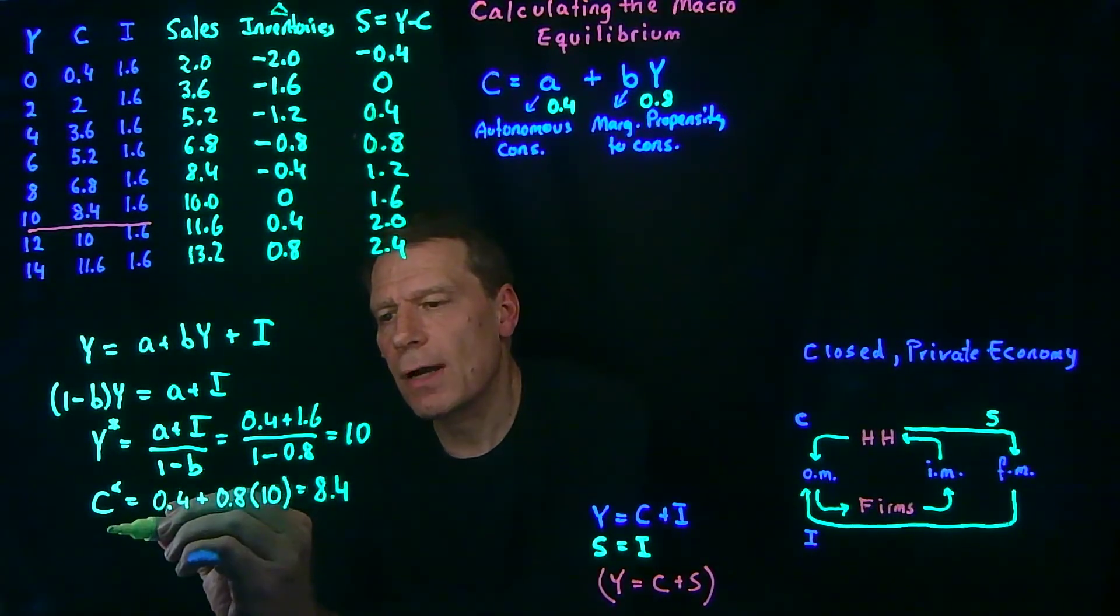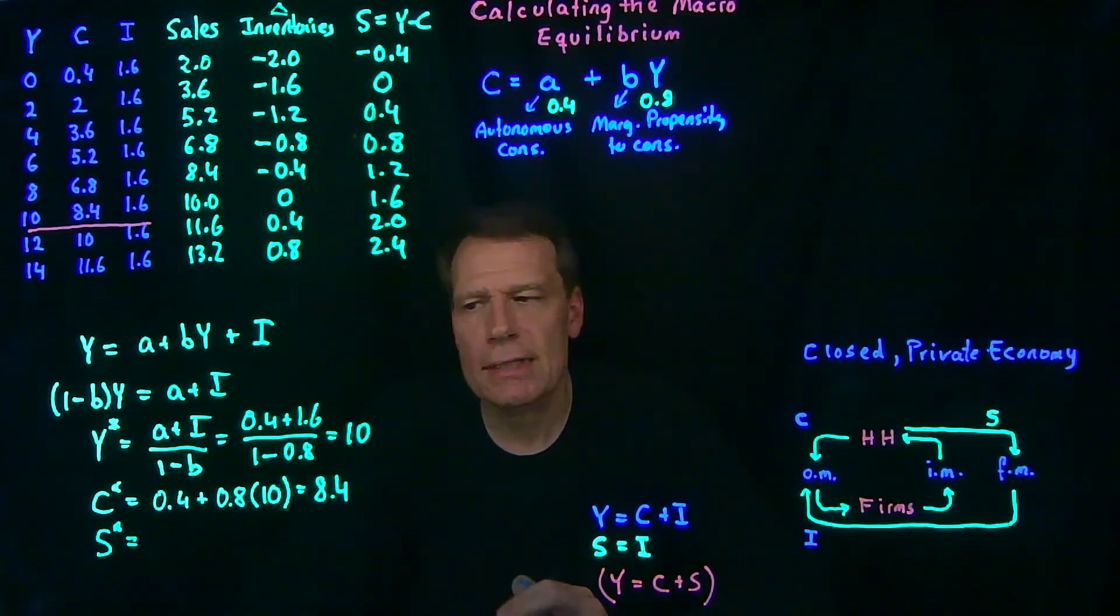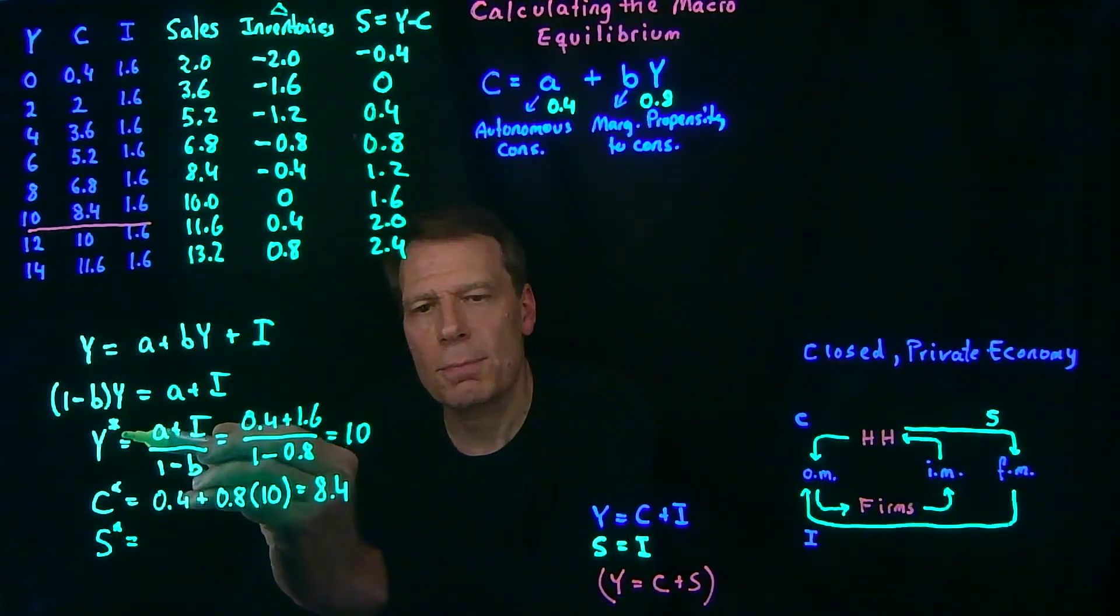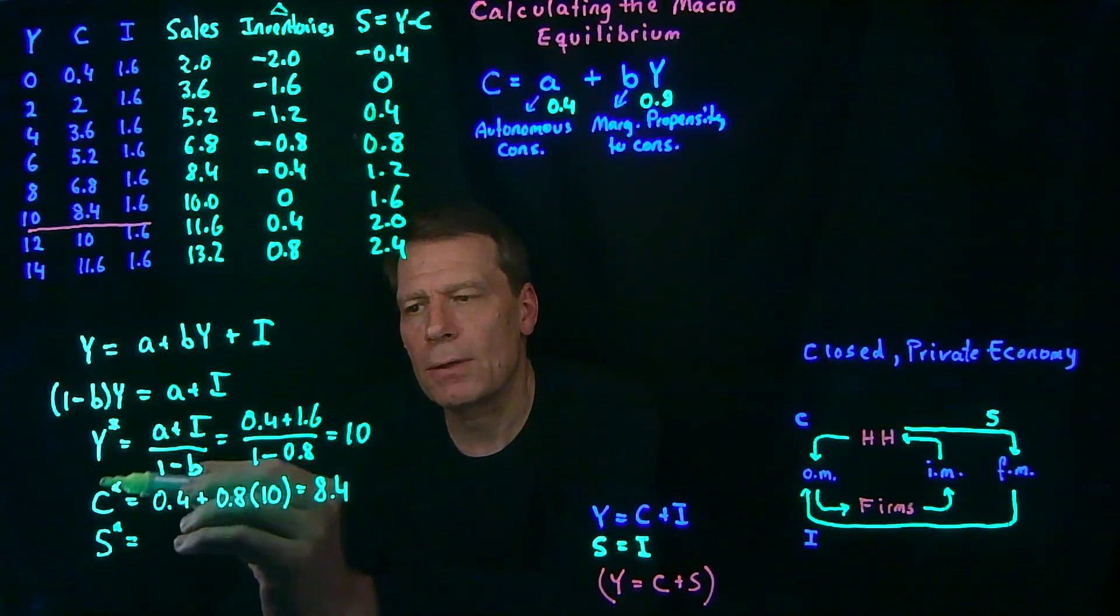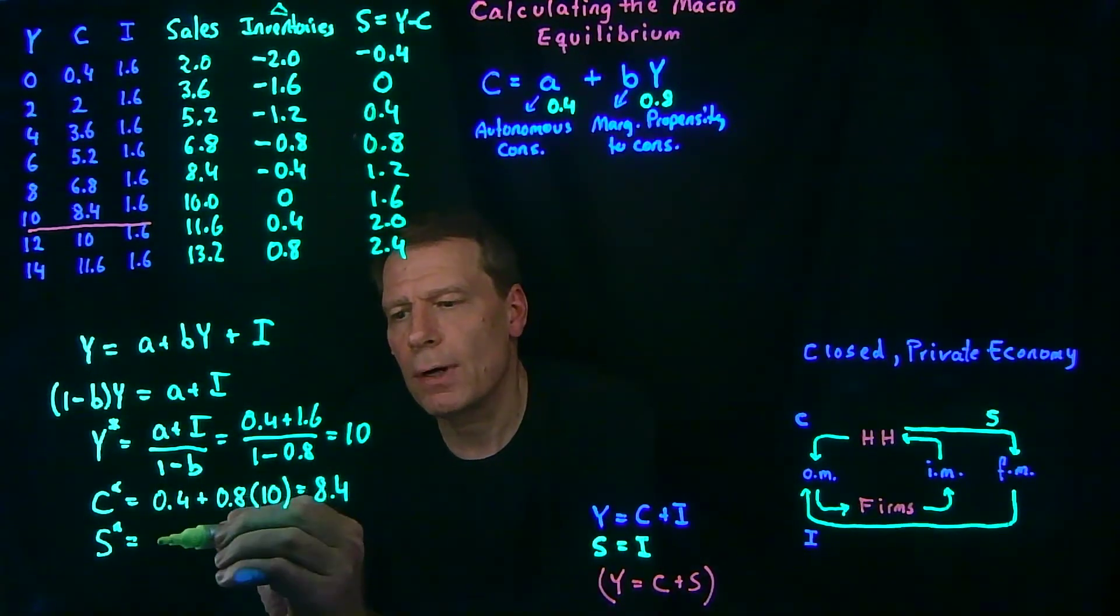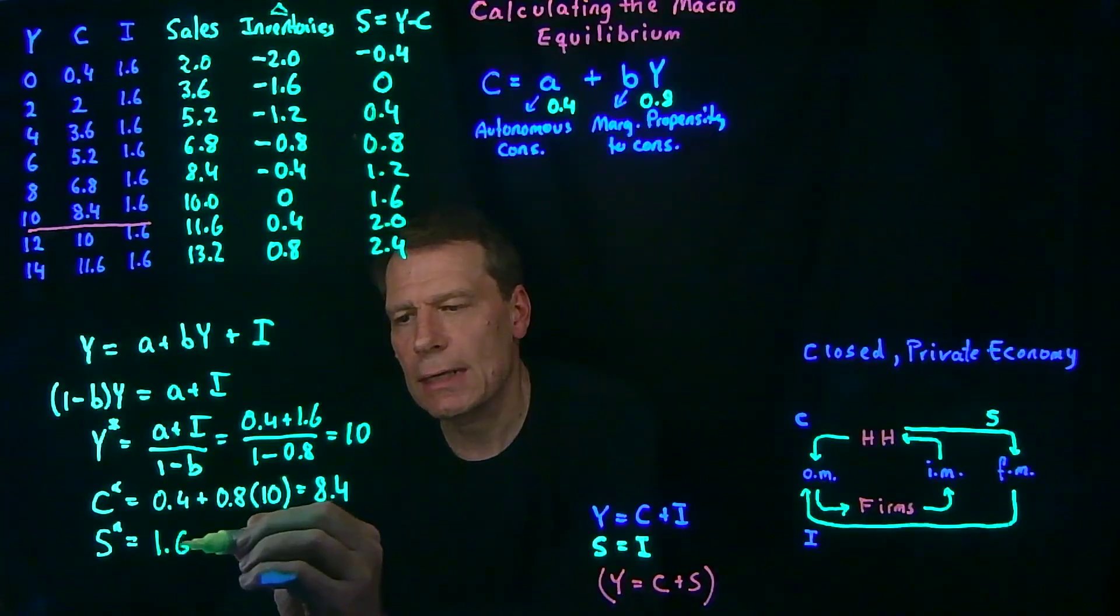And we can even figure out equilibrium level of savings. The equilibrium savings level is just going to be the difference between income in equilibrium and consumption in equilibrium. 10 minus 8.4 gives us 1.6, our equilibrium level of savings.